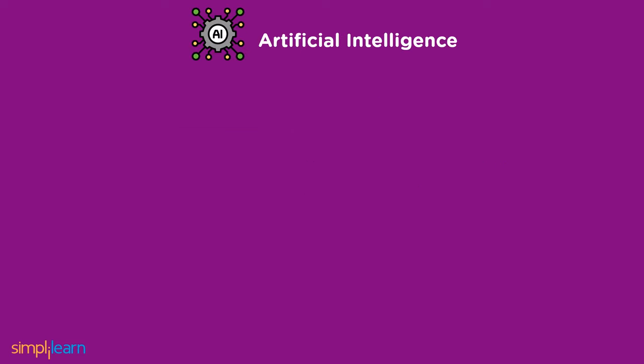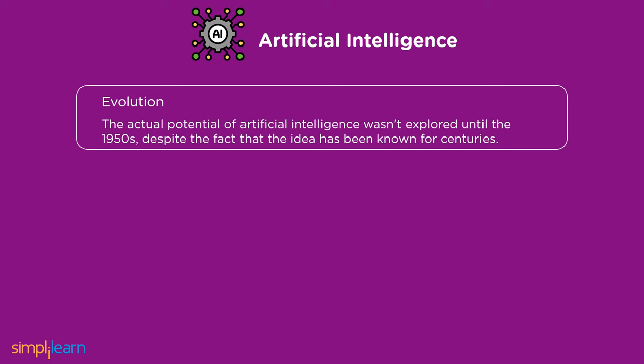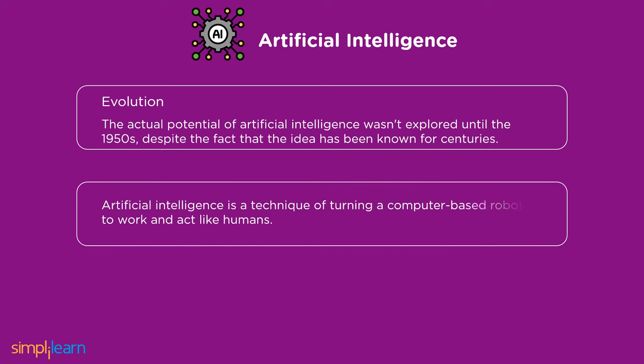Now, coming to the evolution of AI. The potential of artificial intelligence wasn't explored until the 1950s, although the idea has been known for centuries. It wasn't until British polymath Alan Turing posed the question of why machines couldn't use knowledge like humans do to solve problems and make decisions. We can define artificial intelligence as a technique of turning a computer-based robot to work and act like humans.